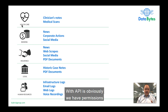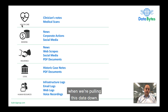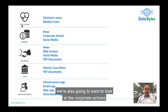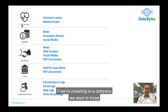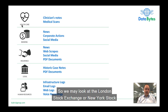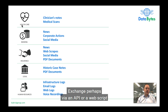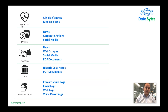With APIs, obviously we have permission, so we're logging in with an API key — but also obey the rate limit rules of where we're pulling this data down. In the case of banking and investments, we're also going to want to look at corporate actions. If we're investing in a company, we want to know what notes they've released. So we may look at the London Stock Exchange or New York Stock Exchange, perhaps via an API or a web scrape, to get that accurate information.